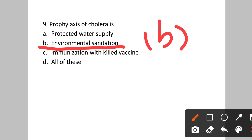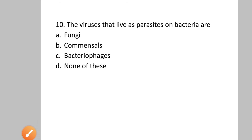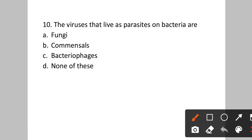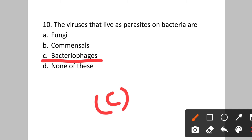Question number ten: The viruses that live as parasites on bacteria are called? Option A: fungi. B: common cells. C: bacteriophages. D: none of these. This is simple — option C, bacteriophages, are the viruses that attack bacteria or live as parasites in bacteria. Option C is the correct answer.